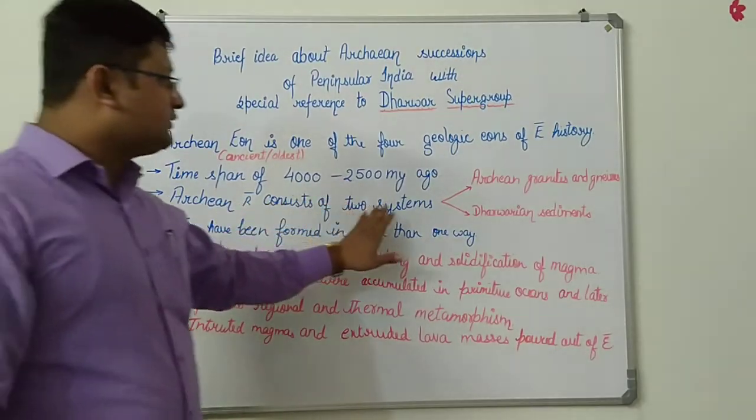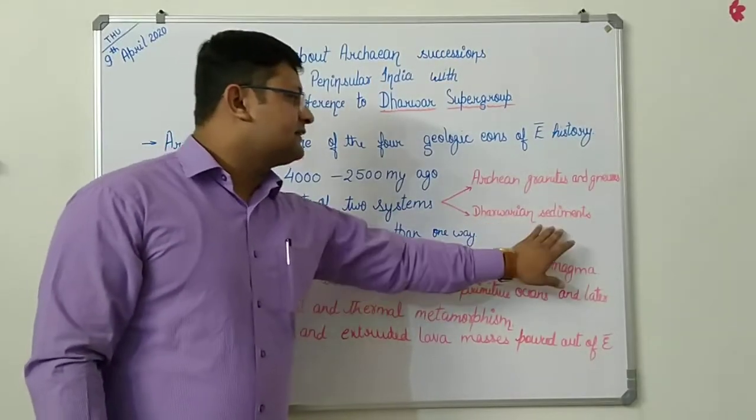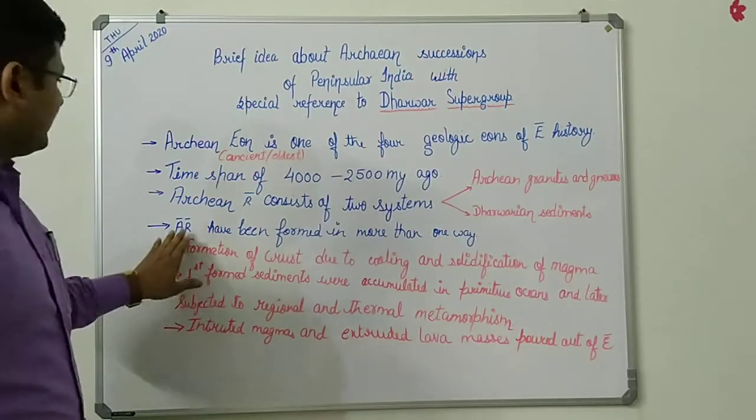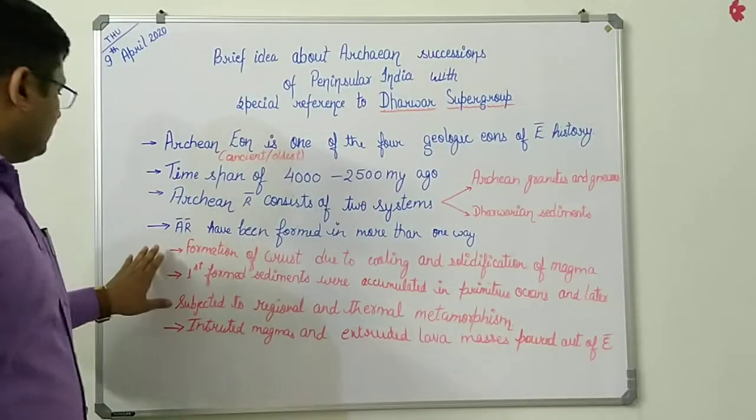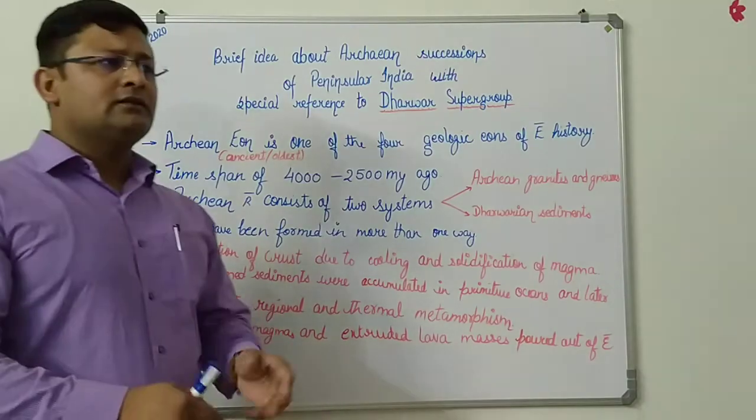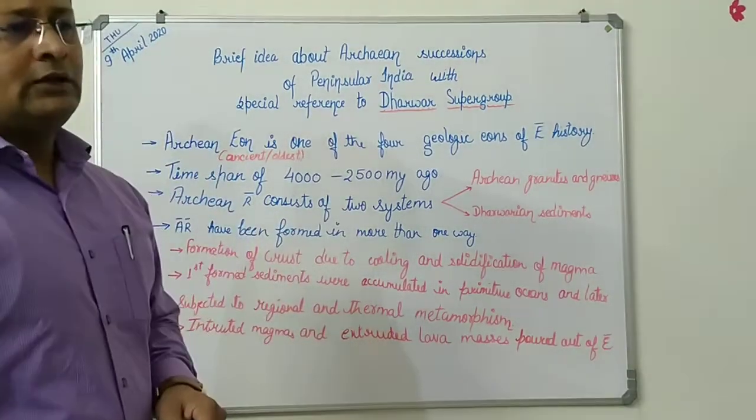Archean rock consists of two systems: Archean granites and gneisses and Dharwarjan sediments. Archean rocks have been formed in more than one way. There are many hypotheses on which the formation of Dharwarjan and Archean have been postulated.